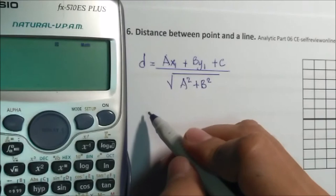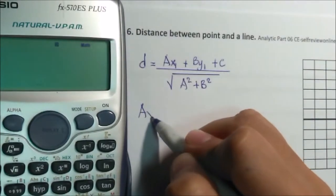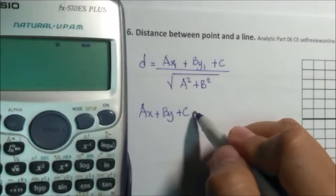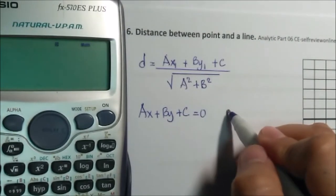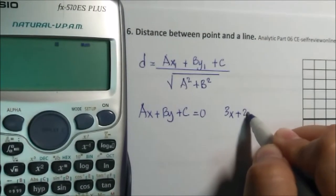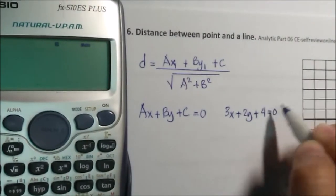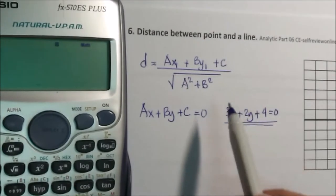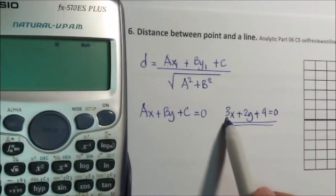Our line must be in the form of Ax plus By plus C equals zero. Let's say for example 3x plus 2y plus 4 equals zero. To use this equation, your A is here, your B and your C.